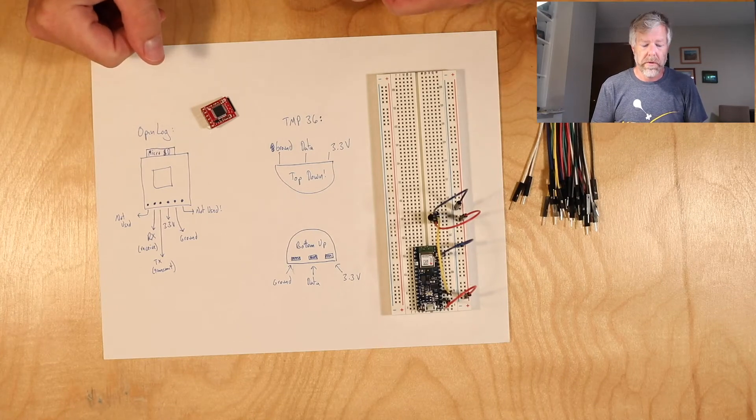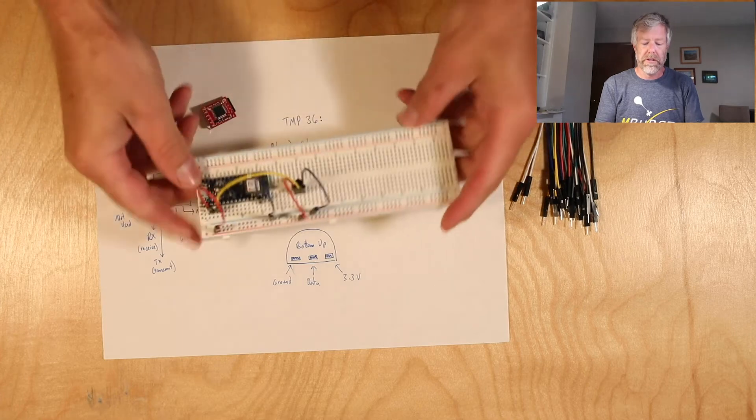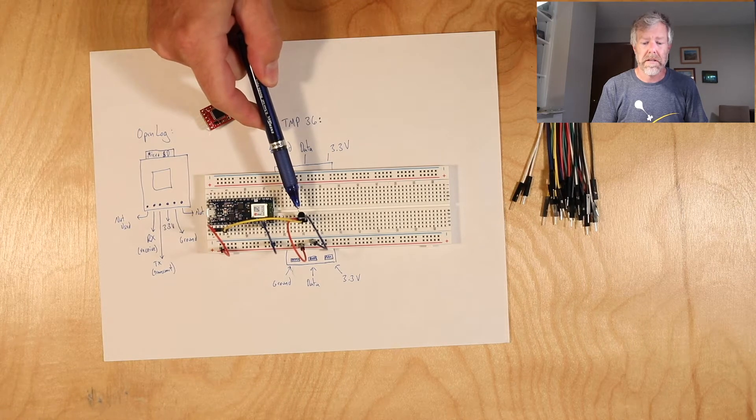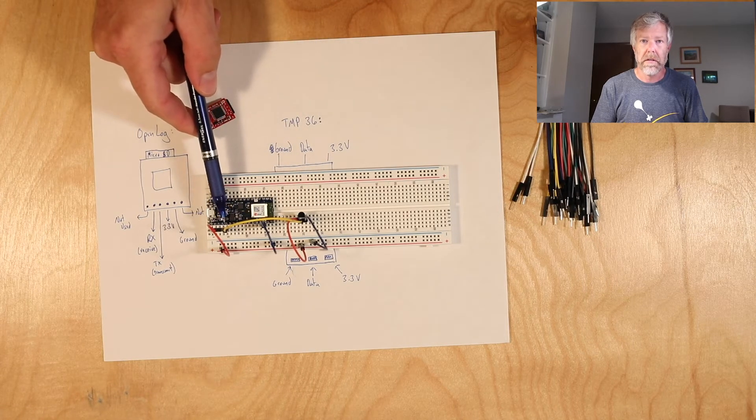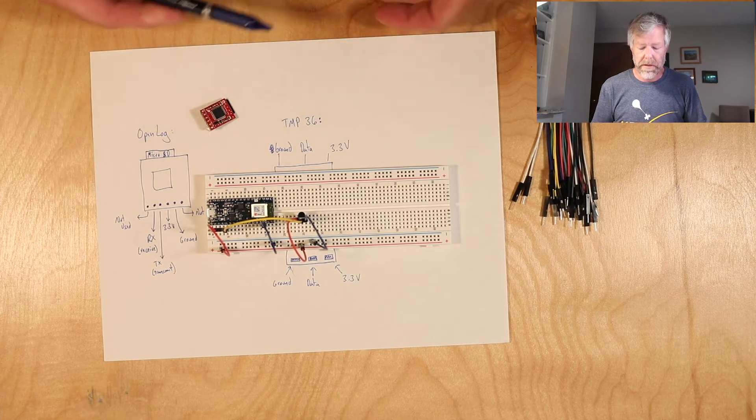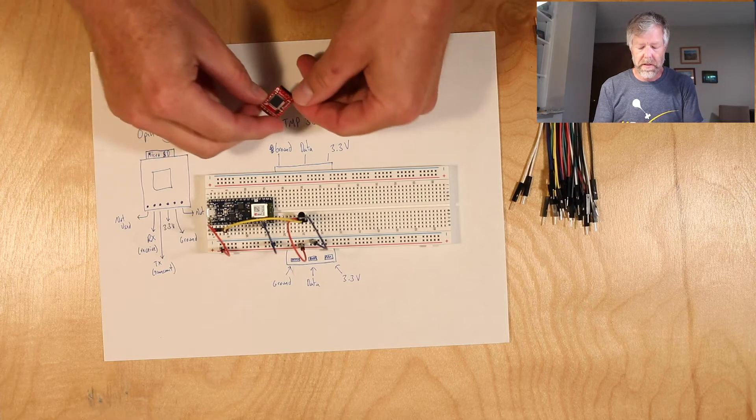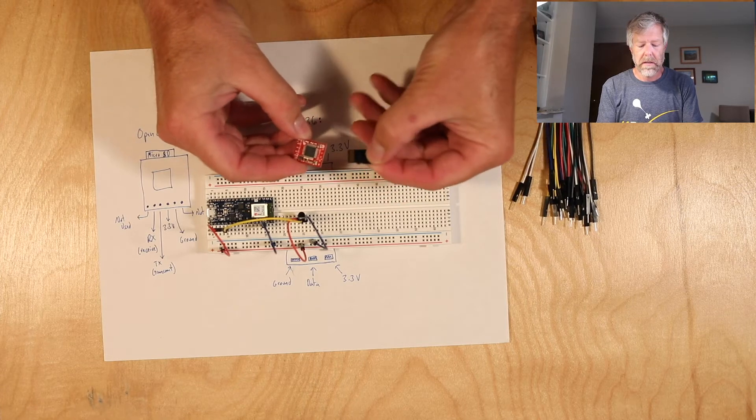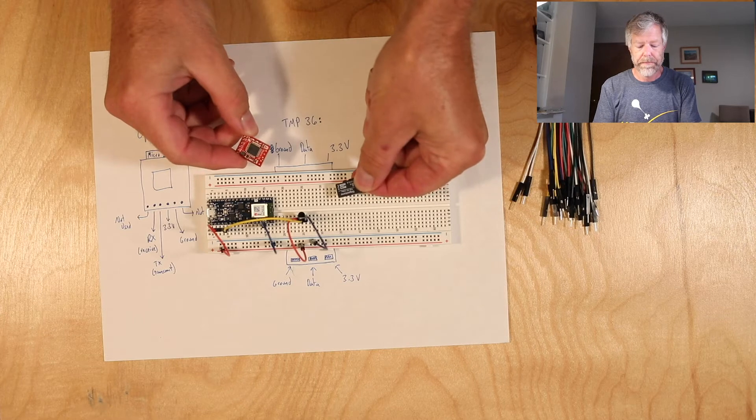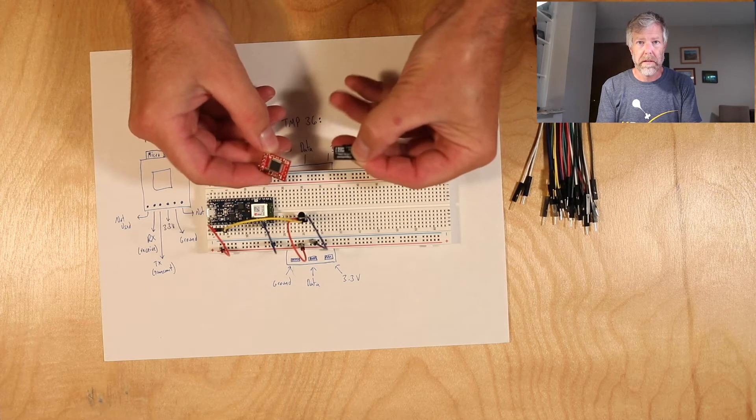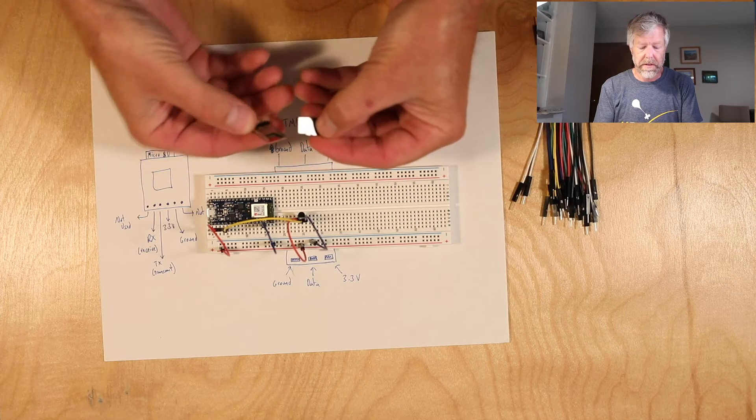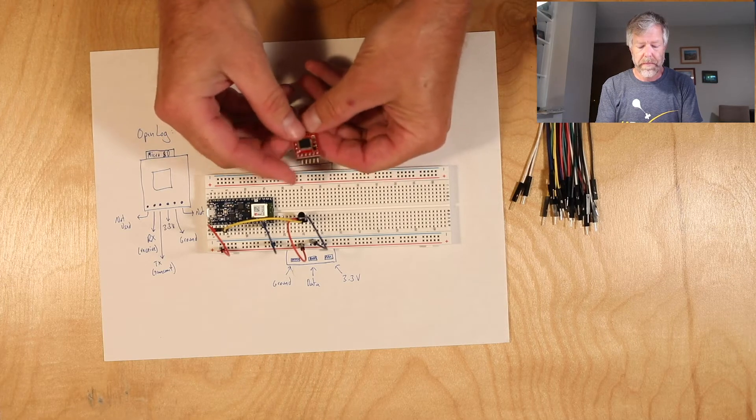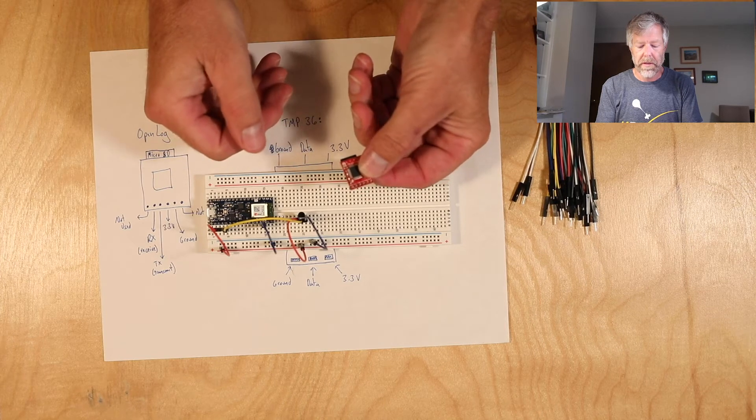What we're going to do with this video is take our board, which we just hooked up with the TMP36 analog sensor being read by the Arduino and output to the serial port. Now we want to use the OpenLog here, which takes in a microSD card and will write the data out to the microSD card. We're going to put the microSD card back in here and hook up the OpenLog to work with the Arduino.